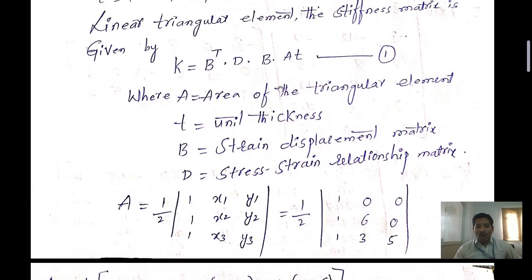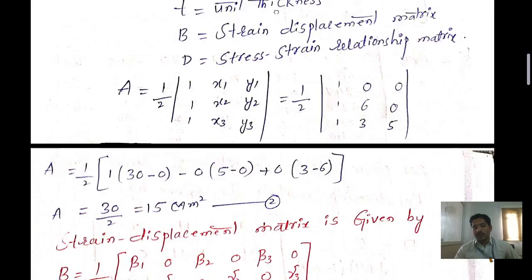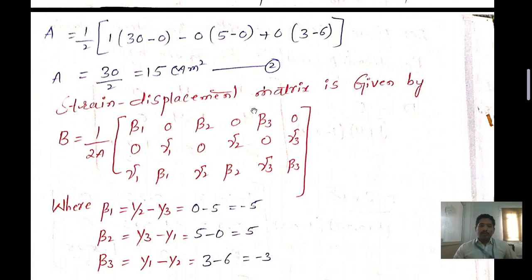After finding the area, we need to find the strain-displacement matrix B and its transpose Bᵀ, as well as the D matrix. The strain-displacement matrix formula is B = (1/2A) × [β1, 0, β2, 0, β3, 0; 0, γ1, 0, γ2, 0, γ3; γ1, β1, γ2, β2, γ3, β3].